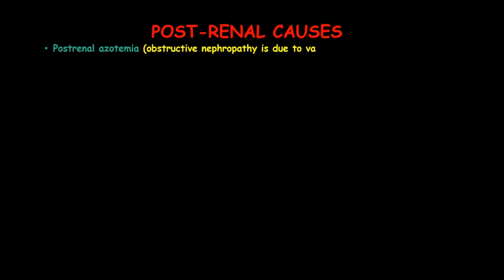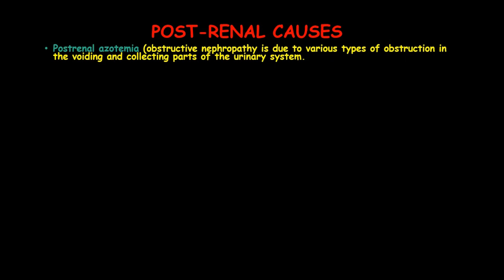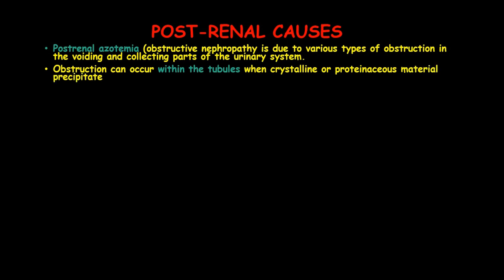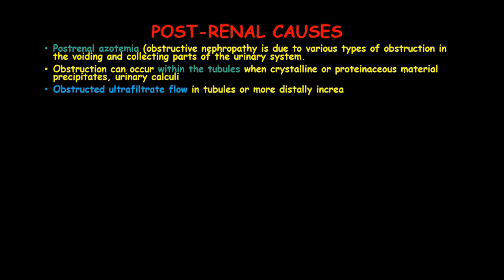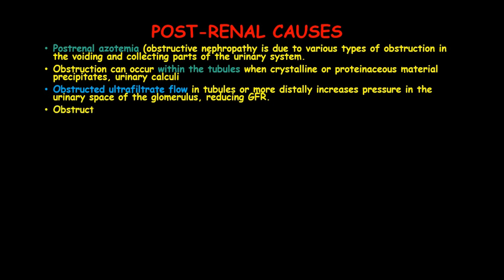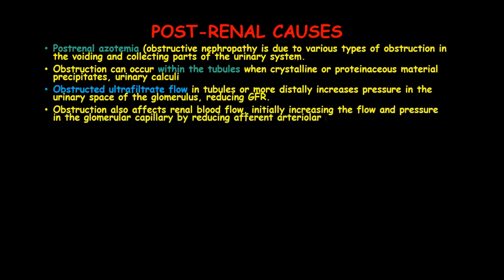Post-renal causes: post-renal azotemia or obstructive nephropathy is due to obstruction in the voiding and collecting parts of the urinary system. Obstruction can occur within the tubules when crystalline or proteinaceous material precipitates, or from urinary calculi. Obstructed ultrafiltrate flow in the tubules increases pressure in the urinary space of the glomeruli, therefore reducing the glomerular filtration rate.